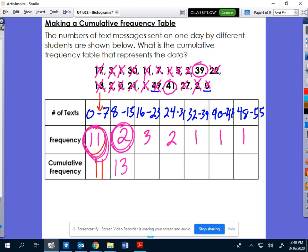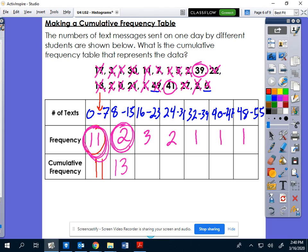And then that basically just continues all the way down the line. So to get the cumulative frequency of 16 to 23, you take your 13 from the previous two intervals, add it to 3, you get 16.